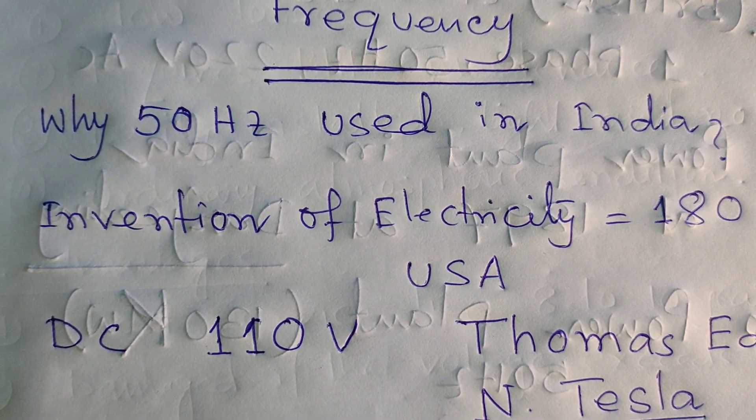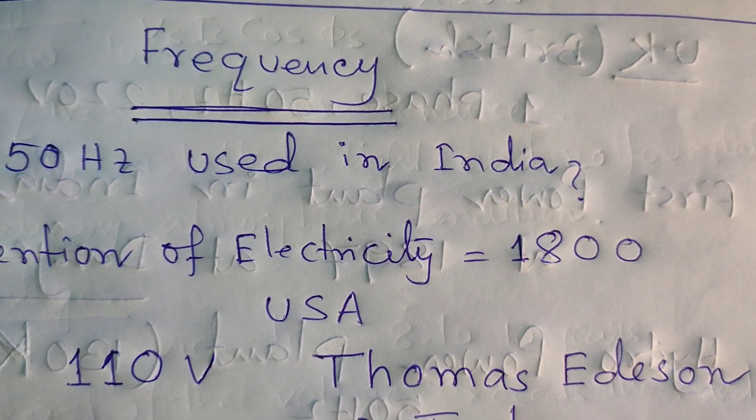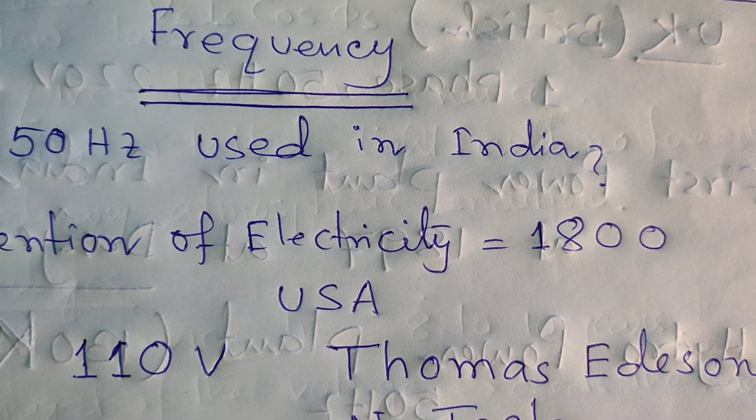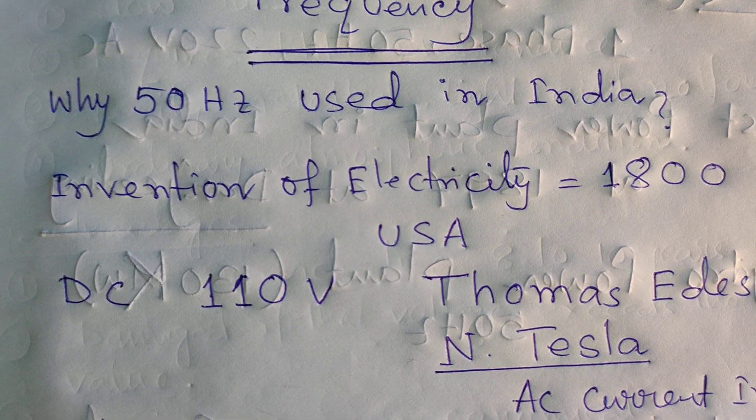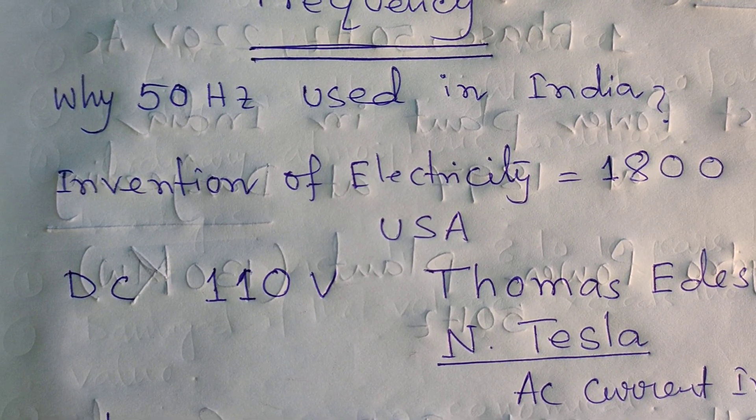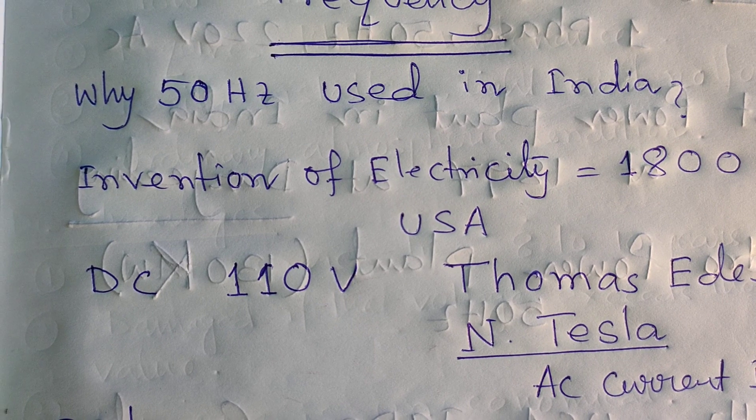The company that invented this electricity was owned by Thomas Edison. After a few years, Nikola Tesla invented AC current.